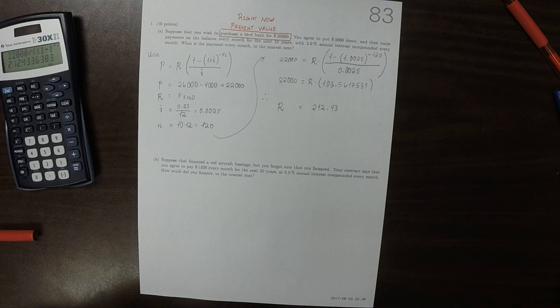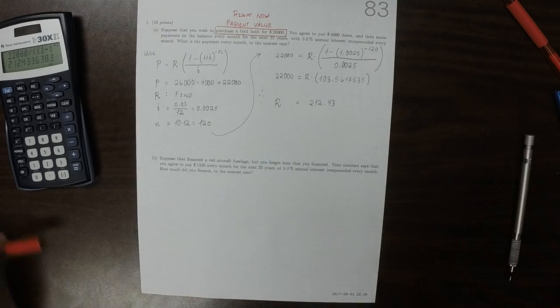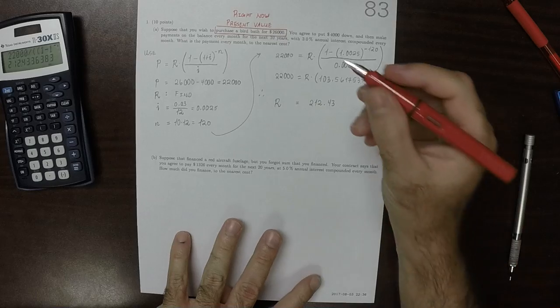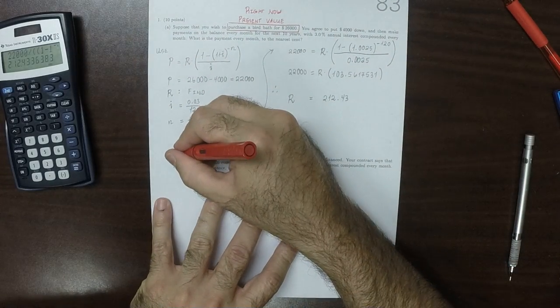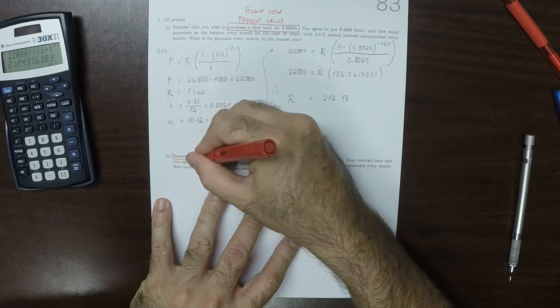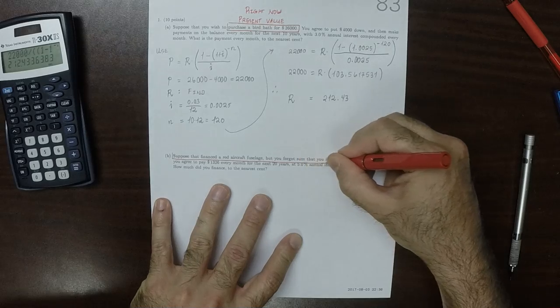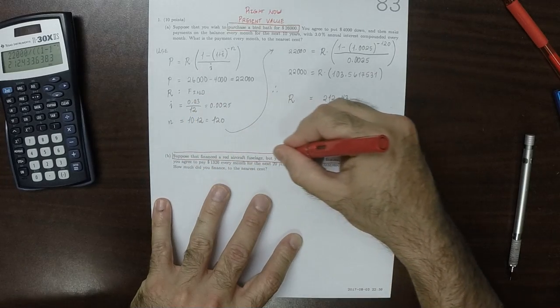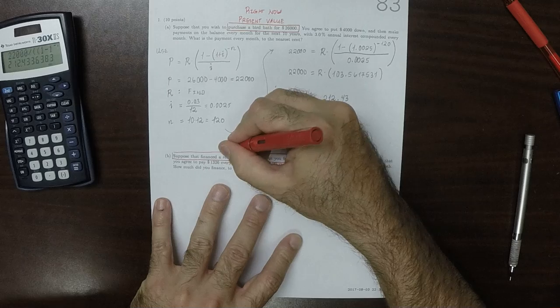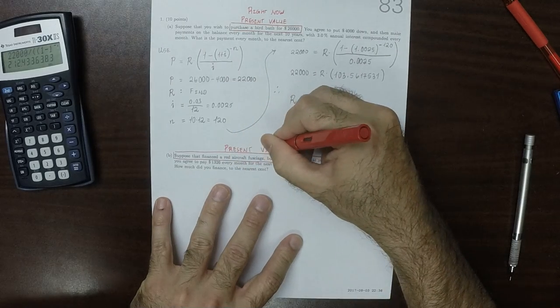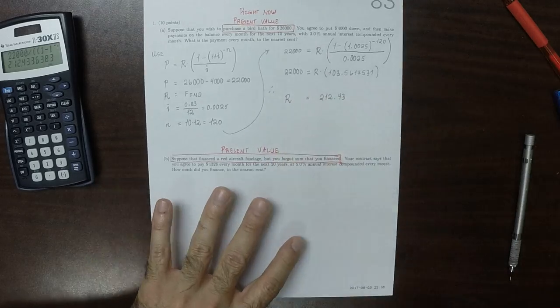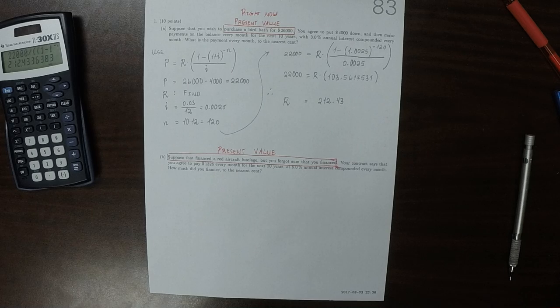Oh, a red aircraft fuselage. But you forgot the sum that you financed. Suppose that you financed. So, this is saying that you entered into an agreement with someone about the present value of that item at the beginning of that contract.